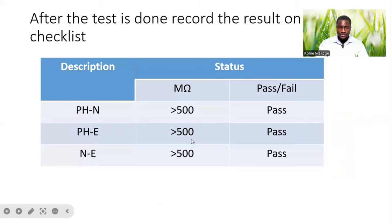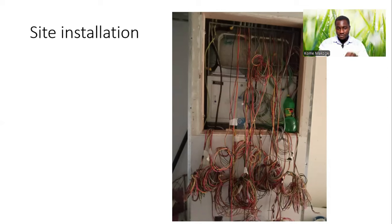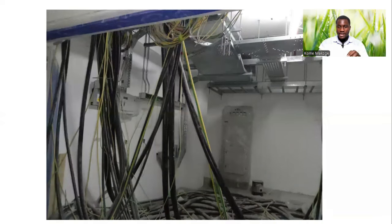Once we are done with the test, we record our different readings and note the status — either pass or fail. In this case, we had all pass. This is a site condition where we have all our different wires and cables pulled for both incoming and outgoing, which is the prerequisite. We have to make sure that we pull them with identification labels prior to performing our insulation resistance tests.